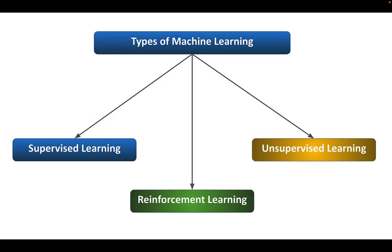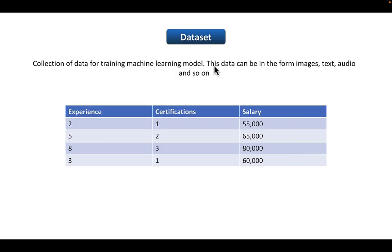Now let's look at the types of machine learning. There are three main types: supervised machine learning, unsupervised machine learning, and reinforcement learning. Before covering those, we need to look at a few machine learning terminologies. The first term is dataset — as the name suggests, a dataset is a collection of data for training our machine learning model, and this data can be in the form of images, text, audio, and so on.